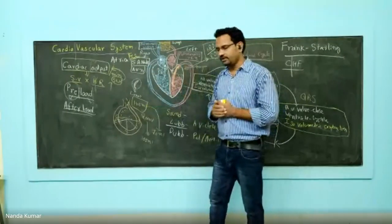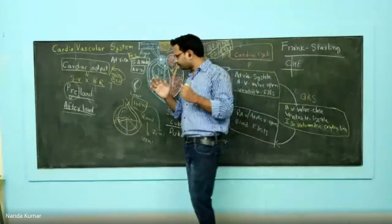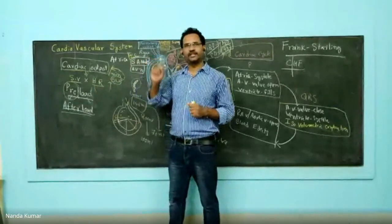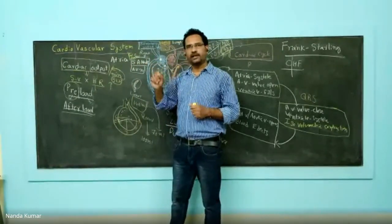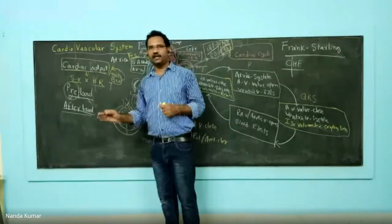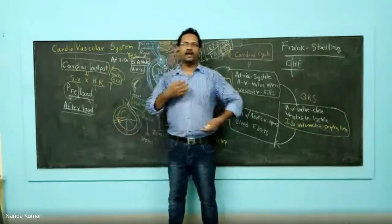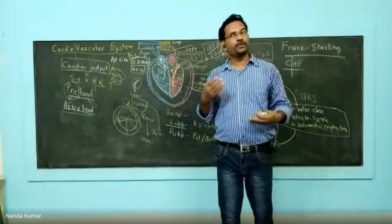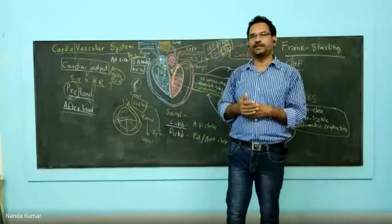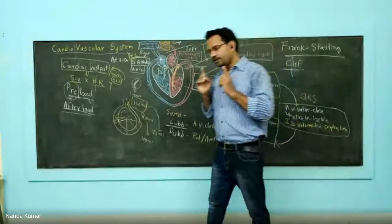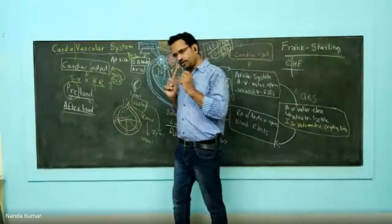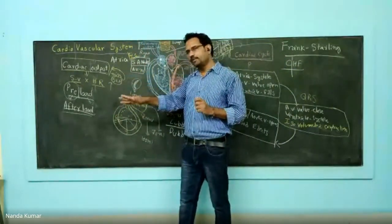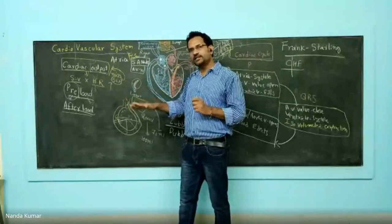Let me give you a practical example. The normal heart rate is 70 beats per minute. During daytime, our heart rate is slightly increased — not 70, but more like 75 or 80. During nighttime, when we are about to sleep, heart rate falls below 70, around 60 or 65.